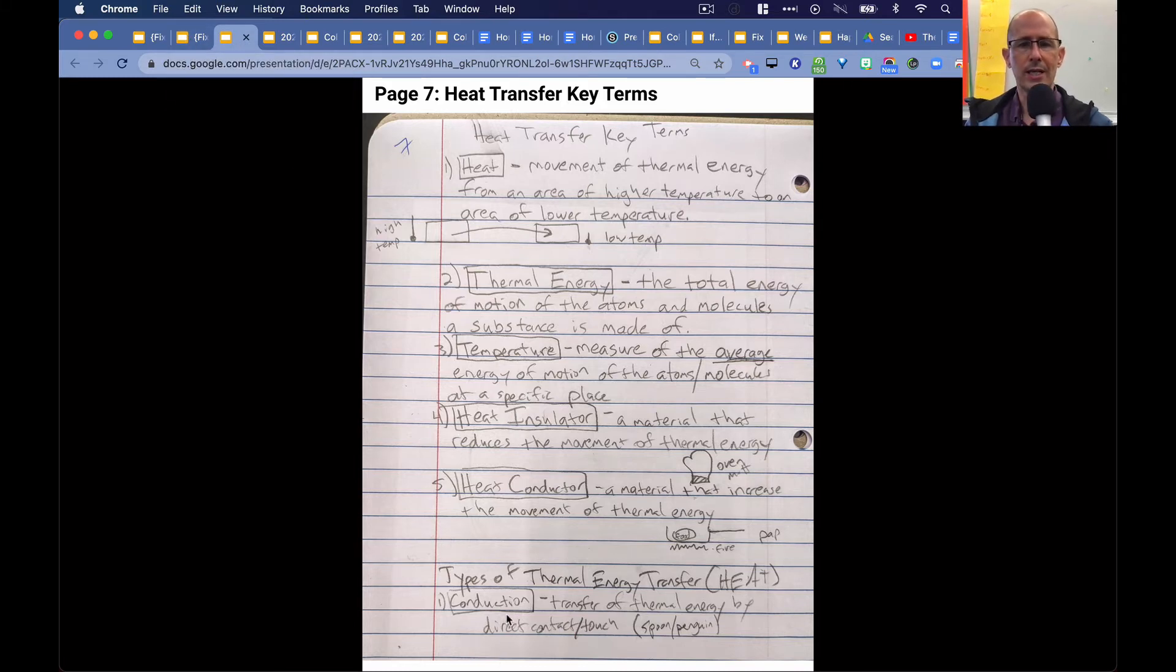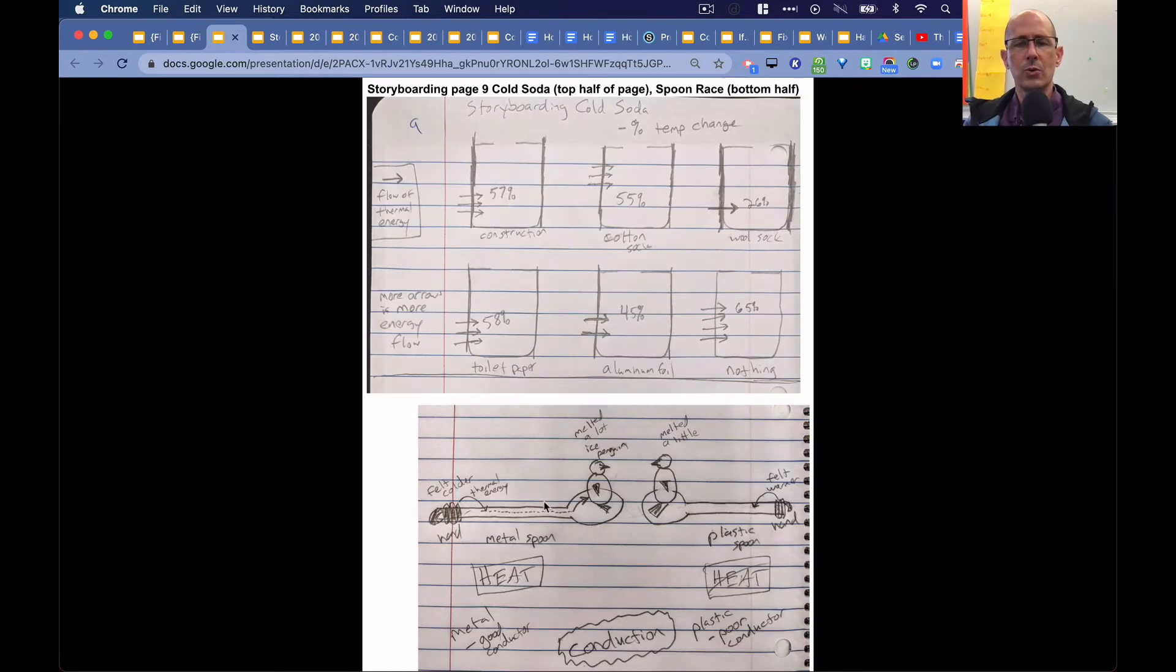And then we also added conduction type of thermal energy, heat transfer. Alright, so we had a person hold a metal spoon and a plastic spoon in their hands, and then we placed ice cube penguins inside or on the spoons. And we noticed that the penguin that was on the metal spoon melted faster or more than the one on the plastic spoon. And we also noticed that our hand touching the metal spoon, our hand got colder versus the hand touching the plastic spoon. So that's what we observed in the spoon race.